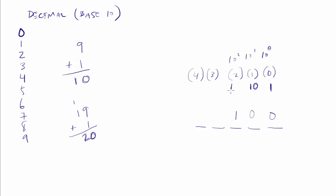10 to the power of three is 1000, and 10 to the power of four is 10,000, and so on and so forth. And so that's how much a digit in this position is worth.